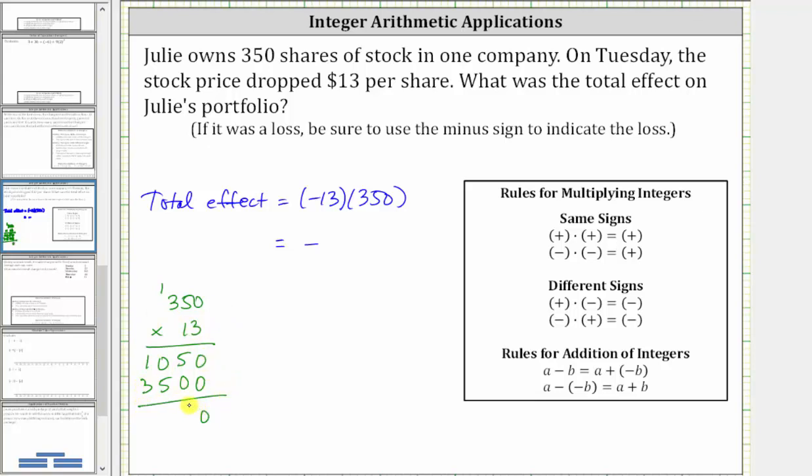And now we add. 350 times 13 is equal to 4550. And therefore the total effect is negative 4550.